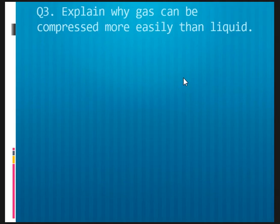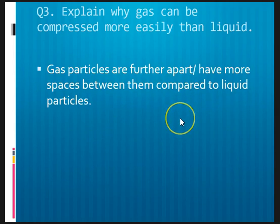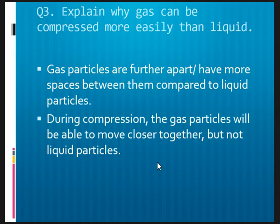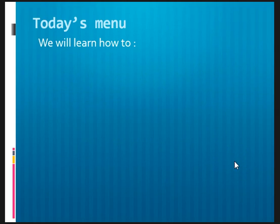Now, let's have a look at question number three. Explain why gas can be compressed more easily than liquid. Again, such kind of question will usually come with two marks. So, what are the two key points that we should explain here? The first would be this. Gas particles are further apart or have more spaces between them compared to liquid particles. You compare the distances between gas and liquid state. The next point you have to write down is this. During compression, the gas particles will be able to move closer together but not liquid particles. So, these are the two points that will gain you the two marks credit for this particular question.